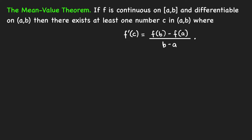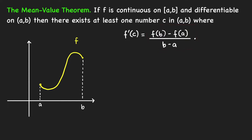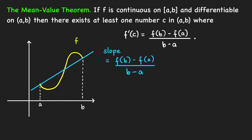Let's understand this theorem geometrically. Suppose we have a function f that is continuous on the closed interval [a, b] and differentiable on the open interval (a, b). Differentiability means at any point between a and b there is a non-vertical tangent line. The right-hand side fraction is the slope of the line passing through the endpoints (a, f(a)) and (b, f(b)), which equals the change in y: (f(b) - f(a)) / (b - a).